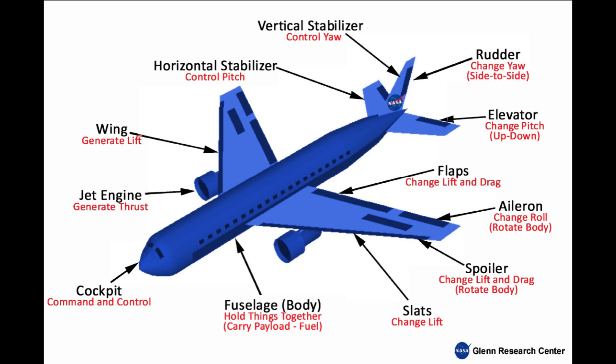Main parts of an airplane and their functions. Fuselage: this is the main body of the airplane. It holds the cockpit, passengers, and cargo, and connects all the other parts together.